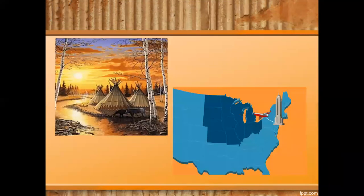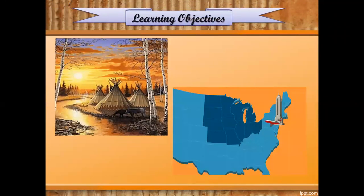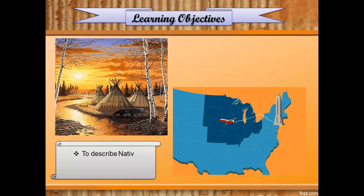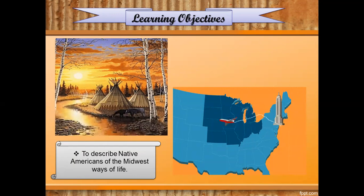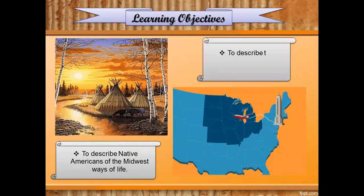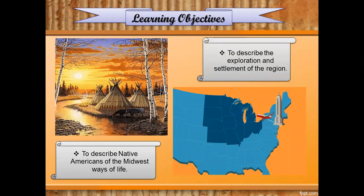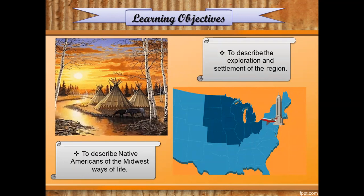Let's start the lesson with the learning objectives. Number one, to describe Native Americans of the Midwest's ways of life — we will find out about their customs, their traditions, or the typical way in which this group of people lives. And number two, we will describe the exploration and settlement of the region. Here we will find out the challenges of the explorers or settlers and what agreements were made in resolving the problems or conflicts of the region.